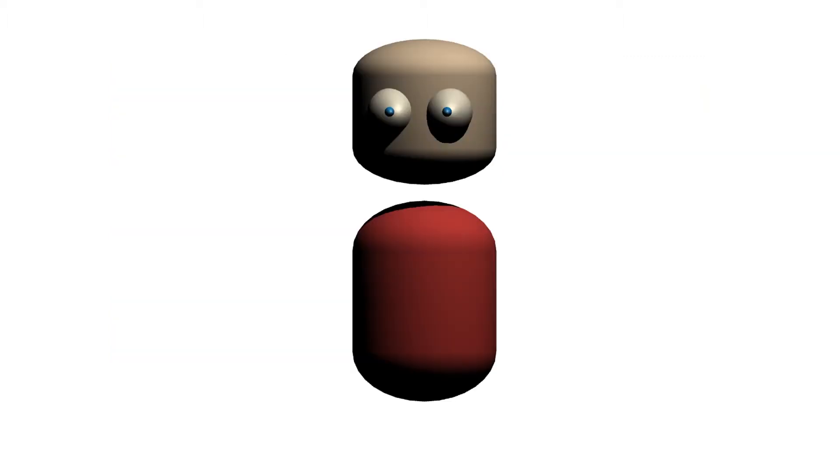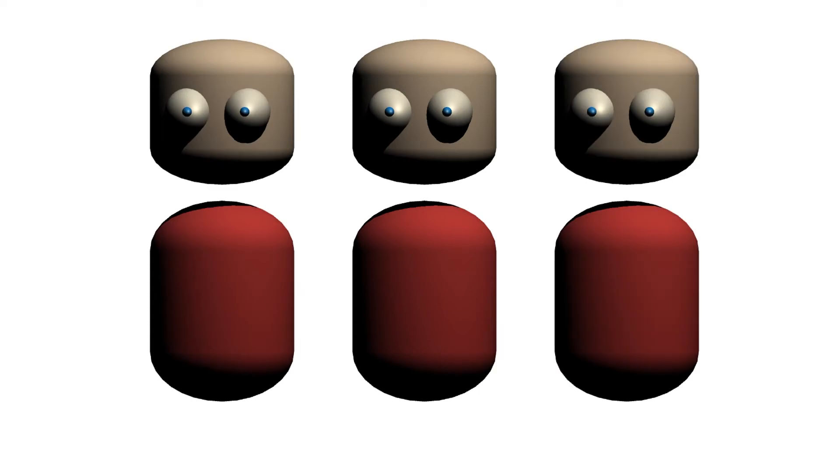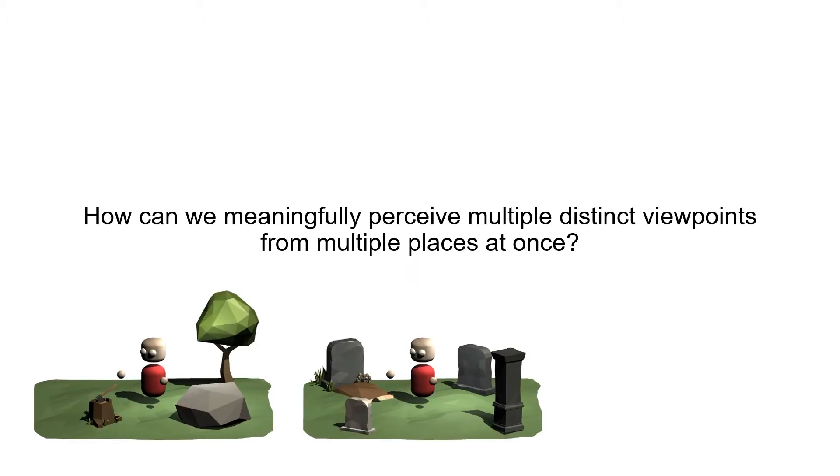In virtual reality, there's no technical reason that our body should only be in one place at a time. On the contrary, technically it's actually quite trivial to duplicate a user's avatar body so that they are in multiple places at once. However, if our avatar is in multiple places at once, it then becomes a question of how to meaningfully perceive multiple distinct viewpoints from these multiple places.